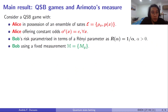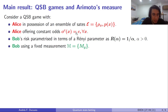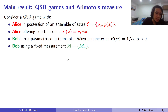Our main result is basically connecting quantum state betting games to Arimoto's dependence measure. Let's consider a game in which the odds are constant, in which Bob's risk is parametrized in terms of a Rényi parameter 1 over alpha — let's consider alpha being positive for the time being. Also, Bob is using a fixed measurement.